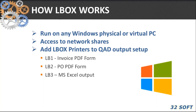Because L Box has no user interface — no pop-up window like in 32 Printer — you specify all parameters and selections by adding different L Box printers in QAD's output selection. For example, you can define a QAD printer called LB1 for invoice printing, LB2 for purchase order forms, LB3 for Excel output, and so on. That's how it's done.